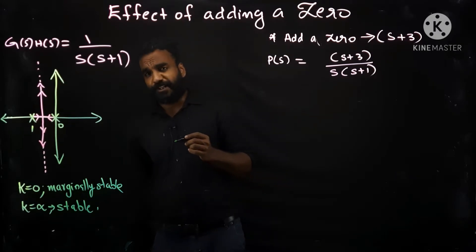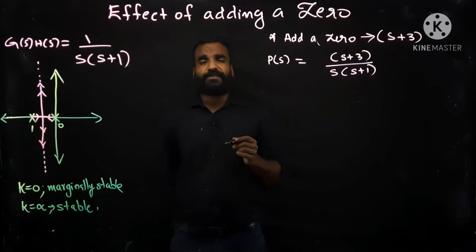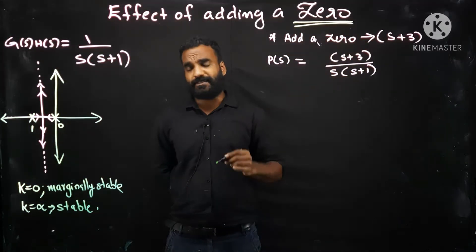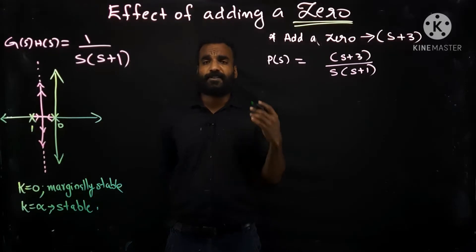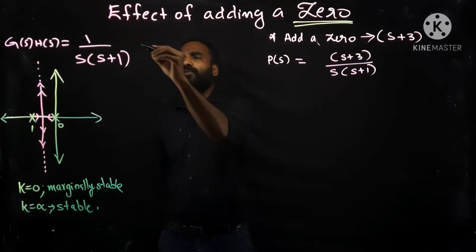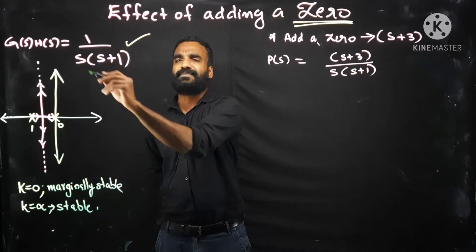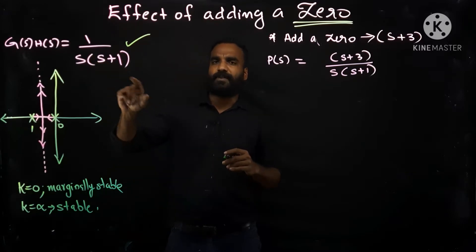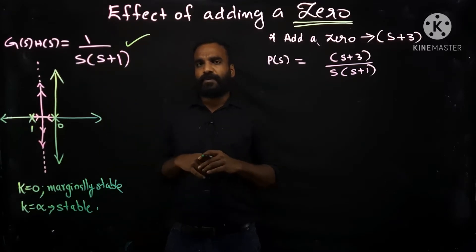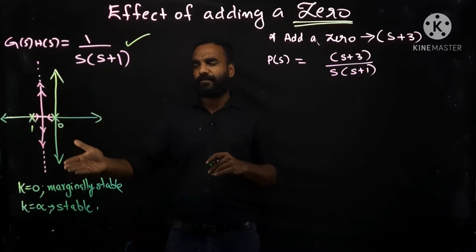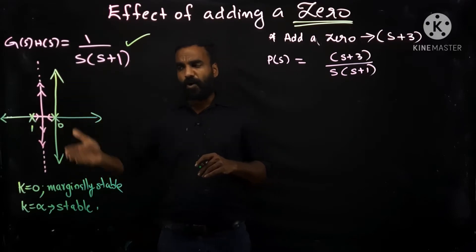Welcome back to our lecture series in linear control systems. In today's class we are discussing the effect of adding a zero to an existing control system. In the last class we were discussing the effect of adding a pole to an existing control system. In that example we also considered this standard test system 1 by s(s+1), a second order system, and we drew the root locus of that system in previous classes.